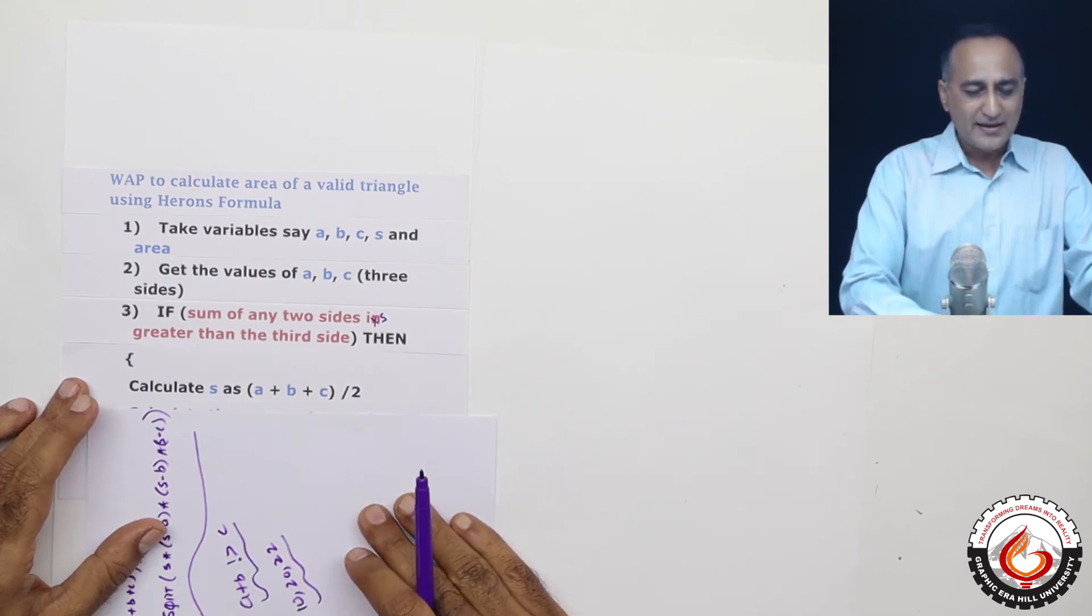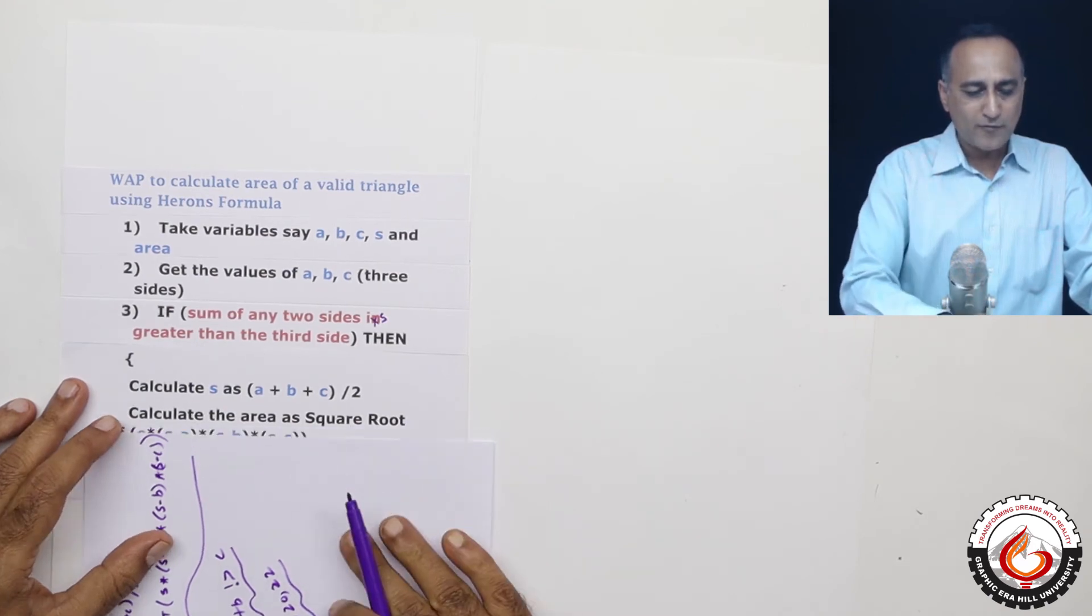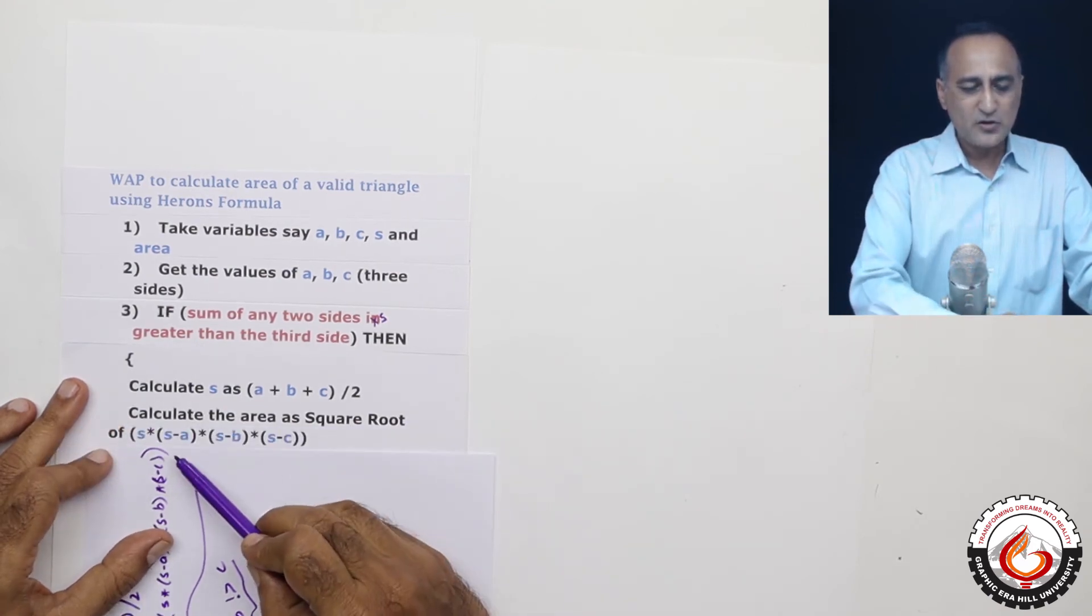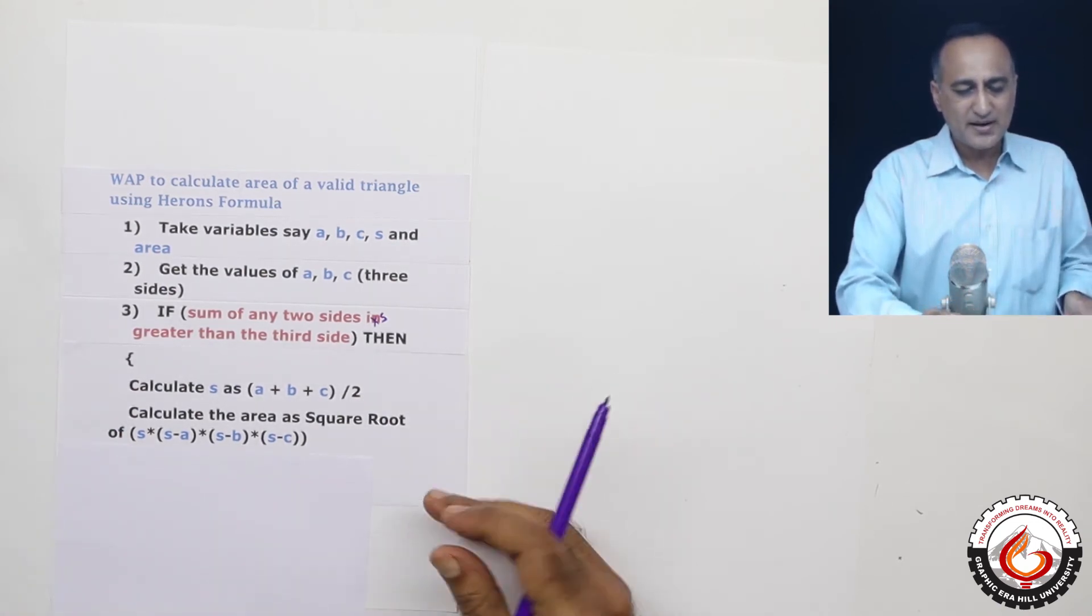After you calculate S, then what you will say is you will calculate the area as square root of S into S minus A into S minus B into S minus C.